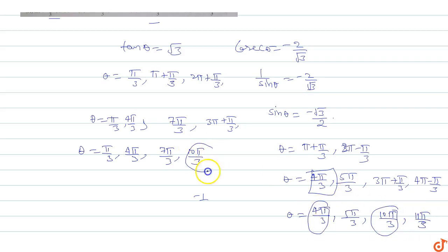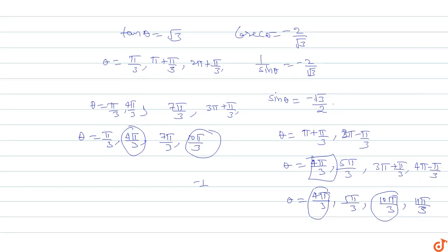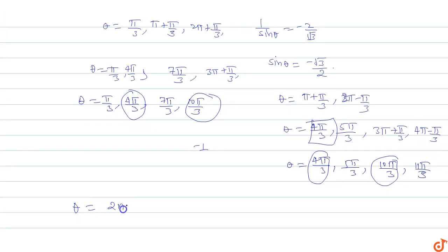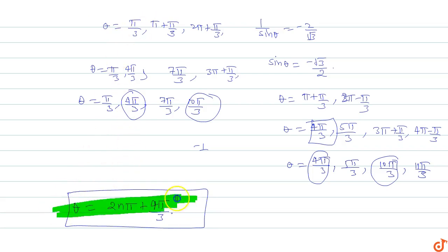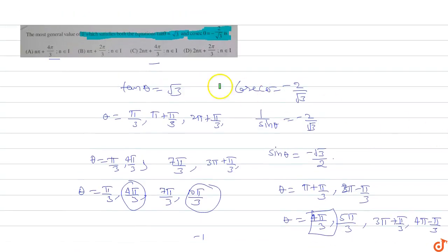So the correct general solution is theta equals 2n pi plus 4pi by 3. For n equals 0, the value is 4pi by 3. For n equals 1, the value is 2pi plus 4pi by 3 equals 10pi by 3, which is again common. So the general solution of theta which satisfies both equations is theta equals 2n pi plus 4pi by 3.